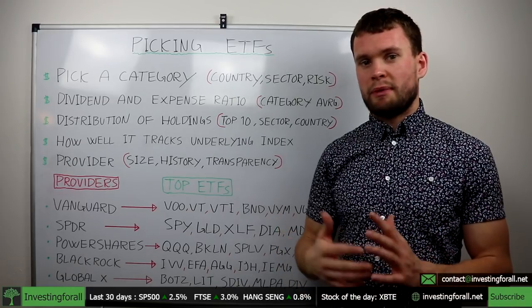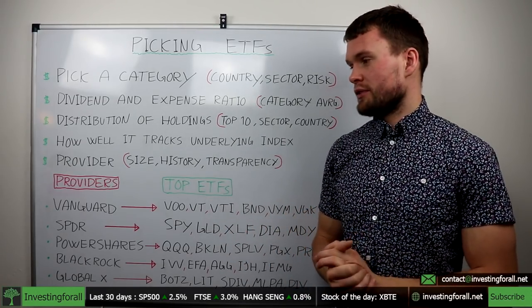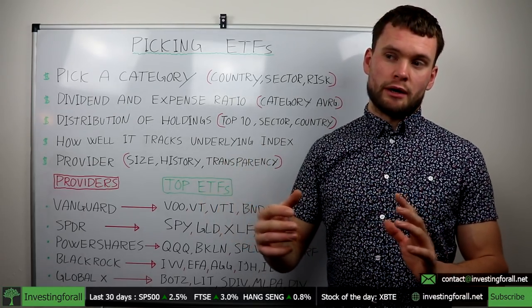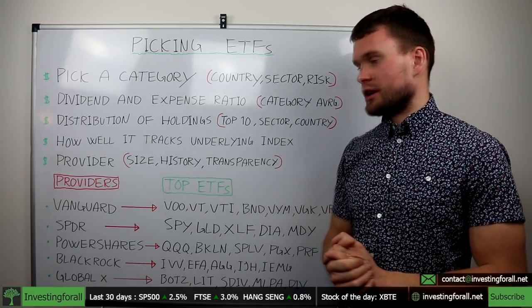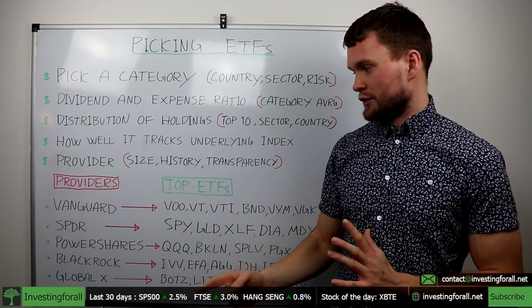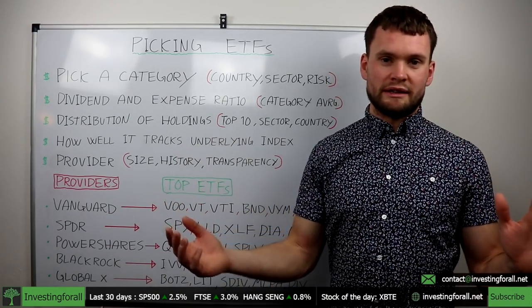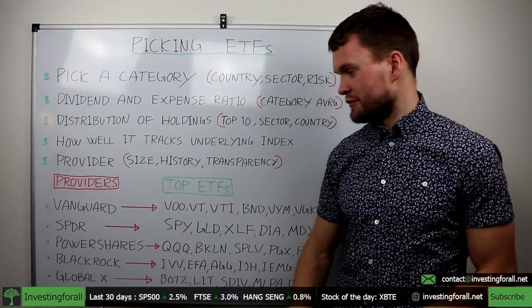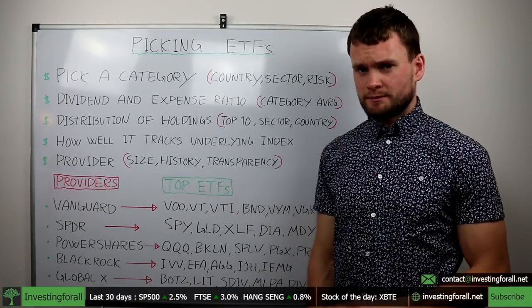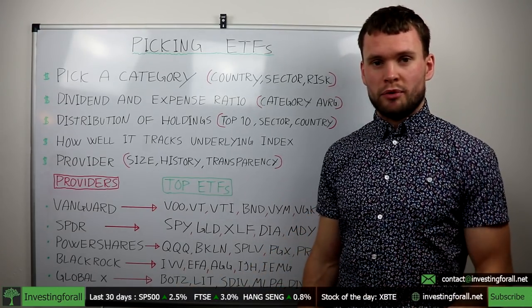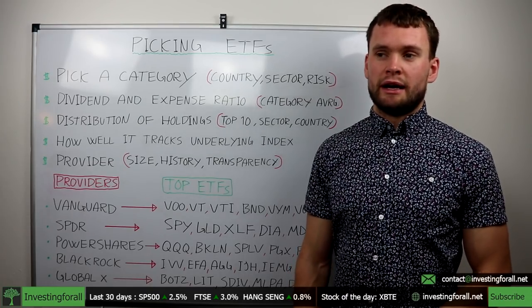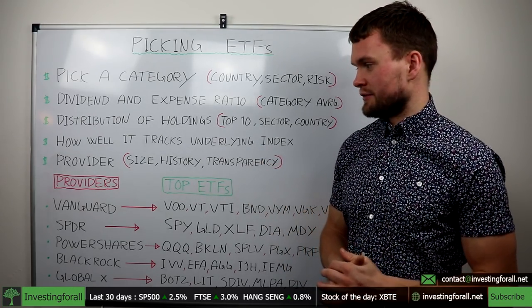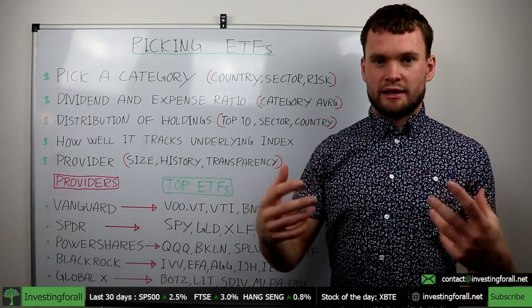Then there's the provider. There are many ways to run ETFs. Some providers are cheaper than others, some have been around longer, and some have different types of ETFs. Vanguard has very broad ETFs — large cap, US, Asia, small cap, bonds, that sort of stuff — while GlobalX has more special ETFs like a Robotics ETF, Lithium ETF, China Consumables ETF, Social Media ETF, all sorts of unique options. So make sure it's a good provider.